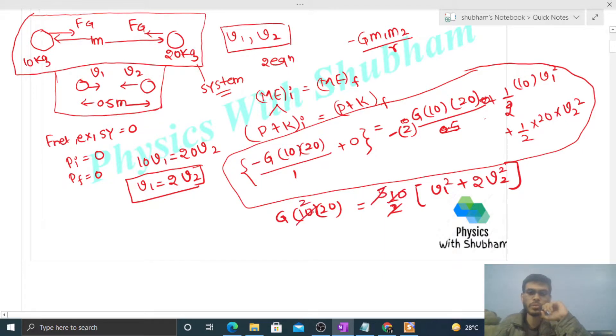That is equal to V1 squared plus twice of V2 squared. So we have to find out the value of V1 and V2.